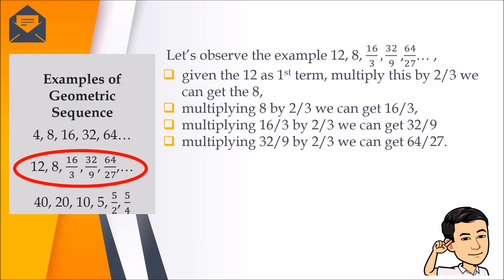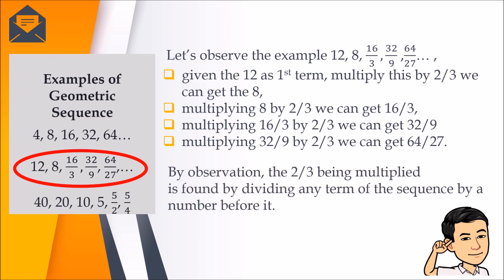Multiplying that 16 over 3 by 2/3, we can get 32 over 9. Multiplying that 32 over 9 by 2/3, we can also get 64 over 27. My observation: that 2/3 being multiplied is actually found by dividing any number of a sequence by the number before it. Let us say 12 and 8, then 8 over 12, that is simplified as 2 over 3.